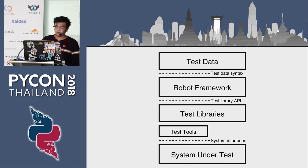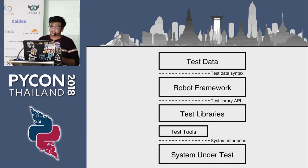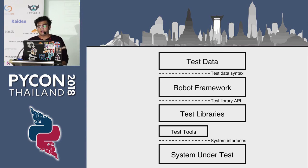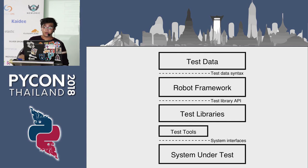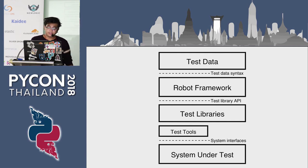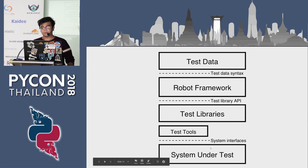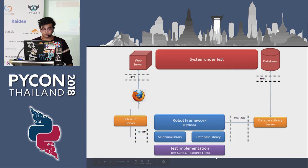This is how the framework operates: there's test data, then the data you're going to use to test the app, then Robot Framework, then the test library, the test tool, the system, and the test. This image will make it more clear.